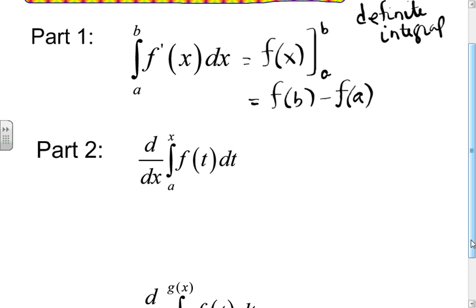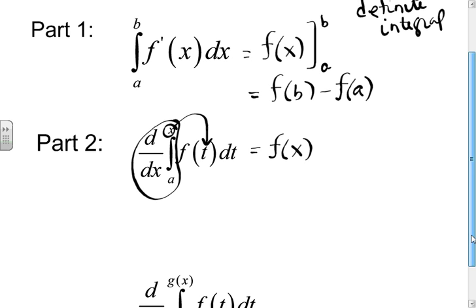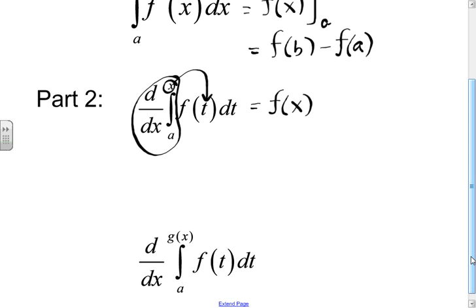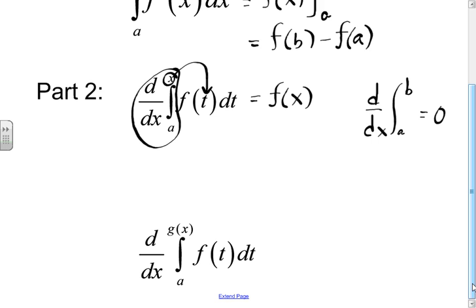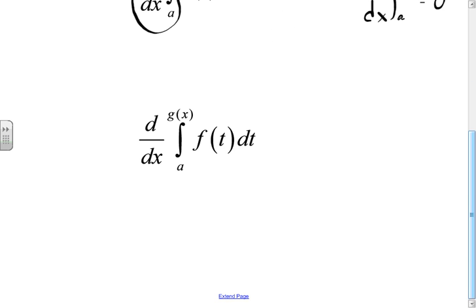Do you remember how to take the derivative of an antiderivative? What do these guys do? They cancel each other out. And you take this x and you substitute it right in there for t. So, this is f of x. If you were to integrate this, you would have some antiderivative evaluated at x minus some antiderivative evaluated at a. What's the derivative of the antiderivative evaluated at a, a constant? It's zero. That's why there's no a in here.